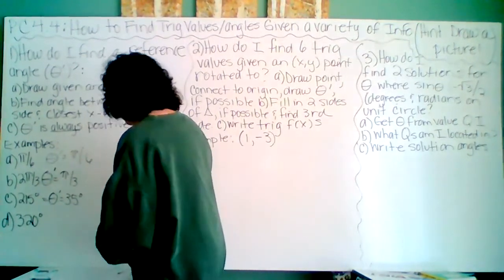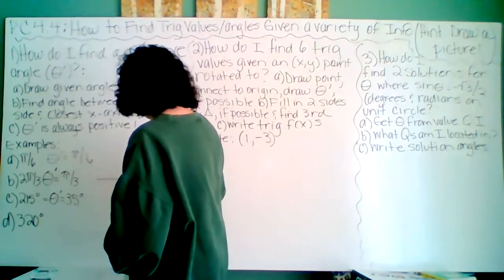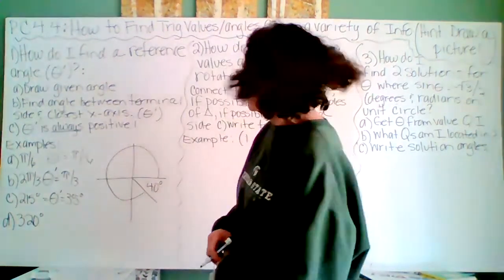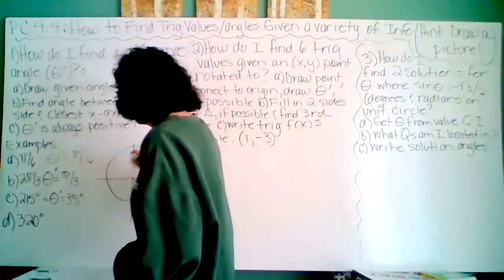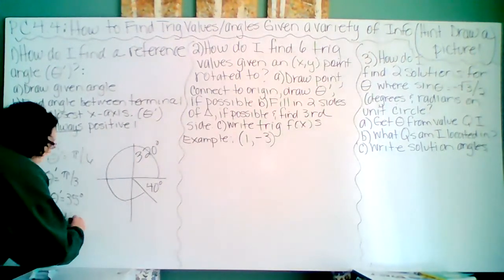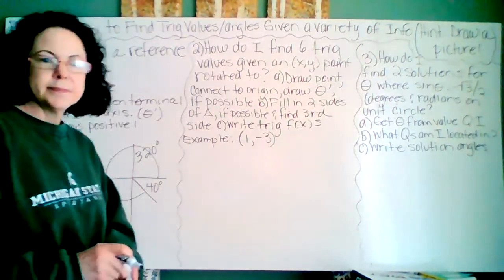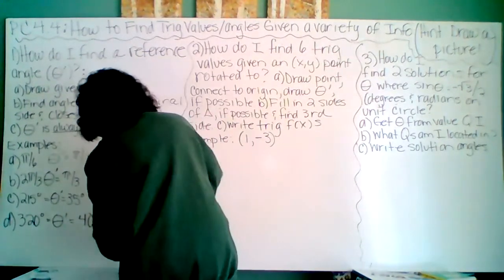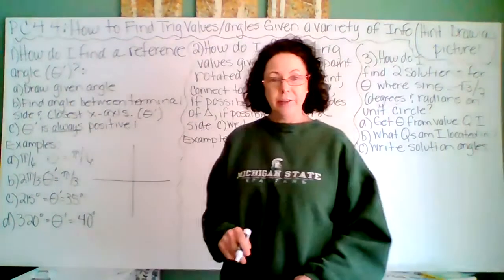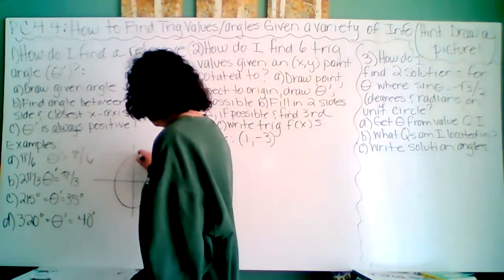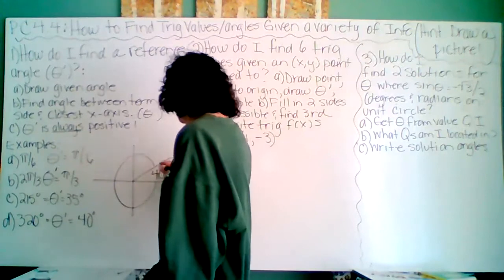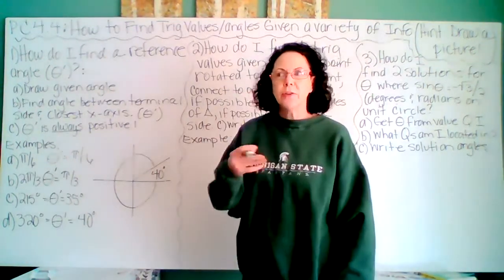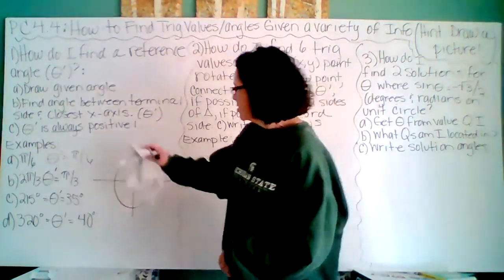320 degrees. I will rotate all the way around and I am 40 degrees short of the closest x-axis. So my reference angle for 320 is 40 degrees. Please notice — what if I rotated negative 320 degrees? I would be 40 degrees short of the closest x-axis and my reference angle would still be 40 degrees. So it doesn't matter if your original angle is positive or negative — your reference angle is always positive.